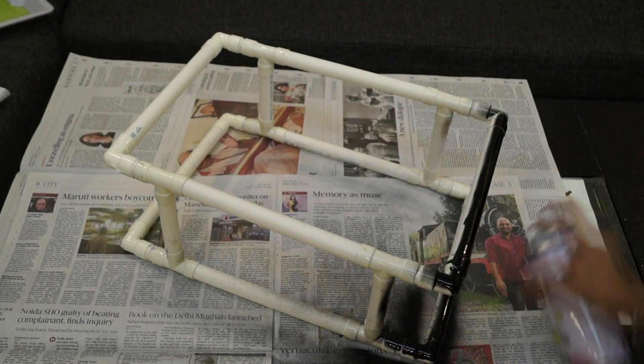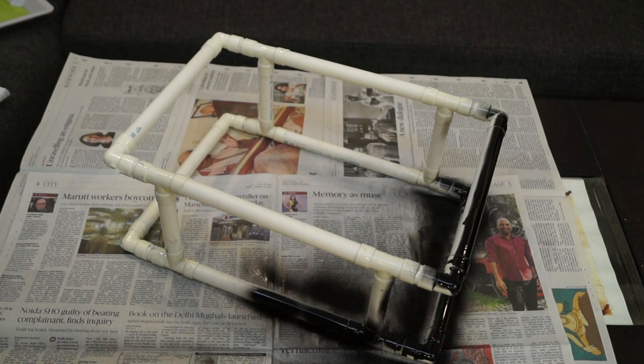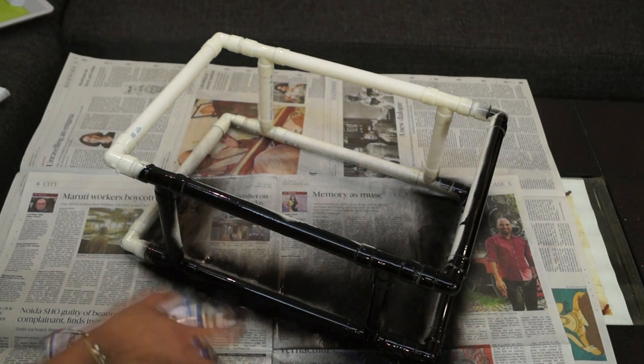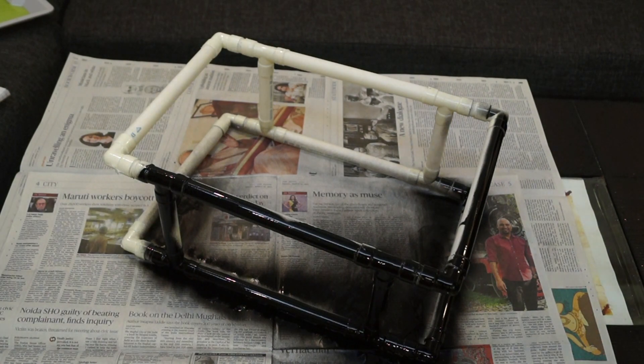So at last we need to spray paint it. Just be a little careful, put newspaper under the table so that you won't ruin the surface. And let it dry for like a good 3-4 hours and you are done with the table.